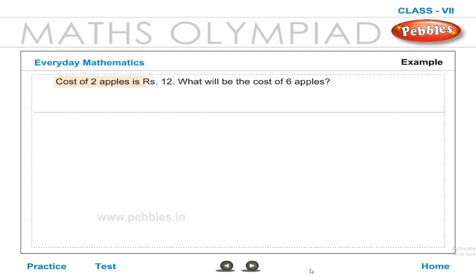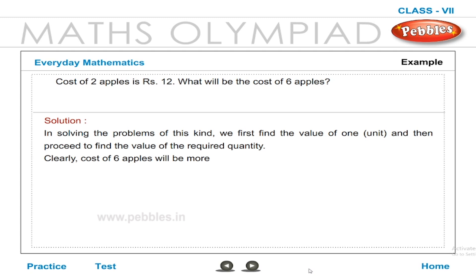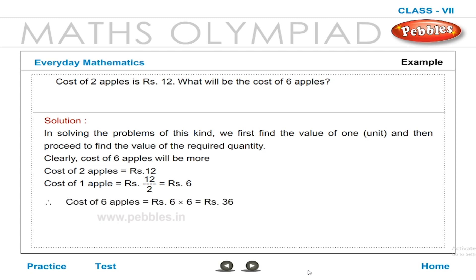the cost of 2 apples is Rs 12. What will be the cost of 6 apples? In solving problems of this kind, we first find the value of 1 unit and then proceed to find the value of the required quantity. Cost of 2 apples = Rs 12, so cost of 1 apple = Rs 12 ÷ 2 = Rs 6. Therefore, cost of 6 apples = Rs 6 × 6 = Rs 36.